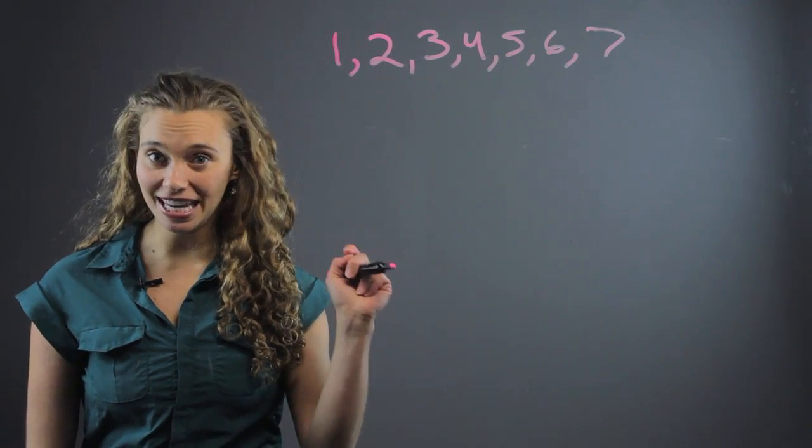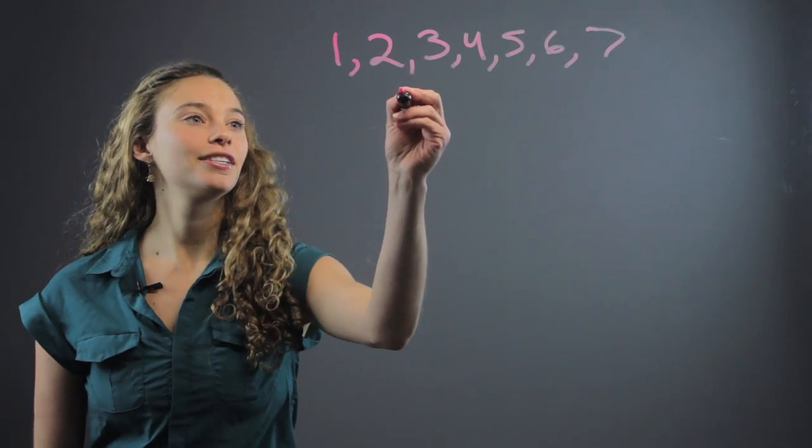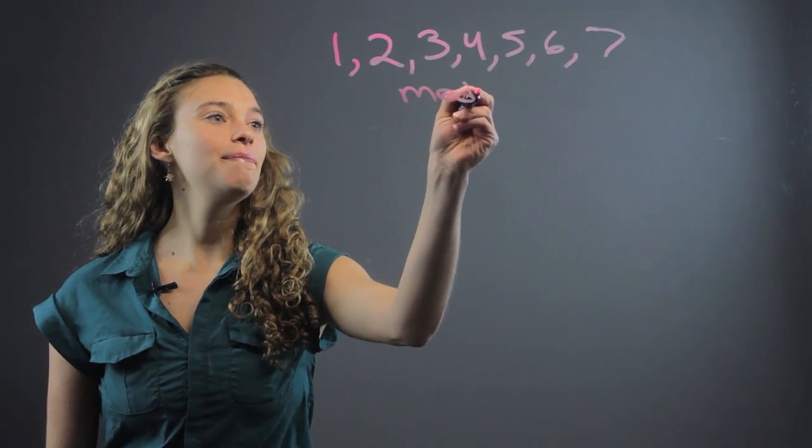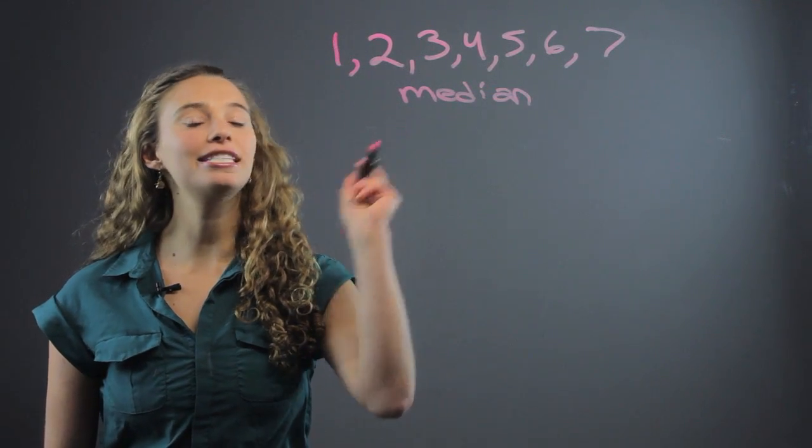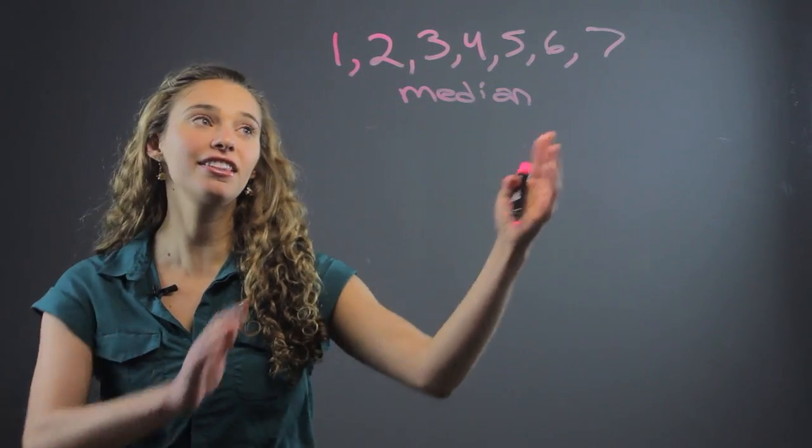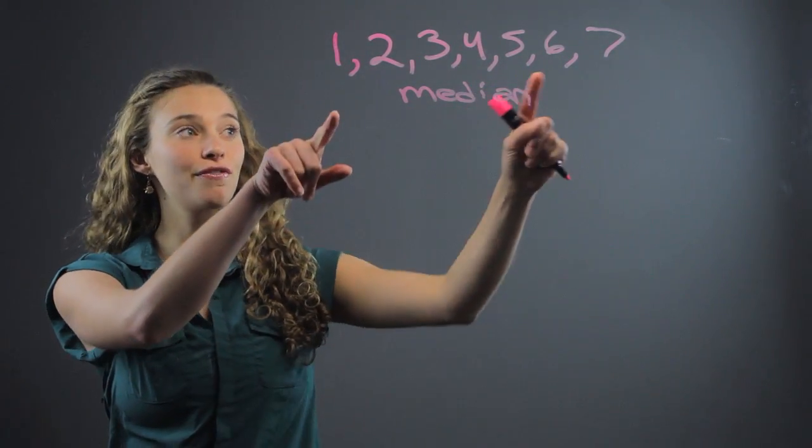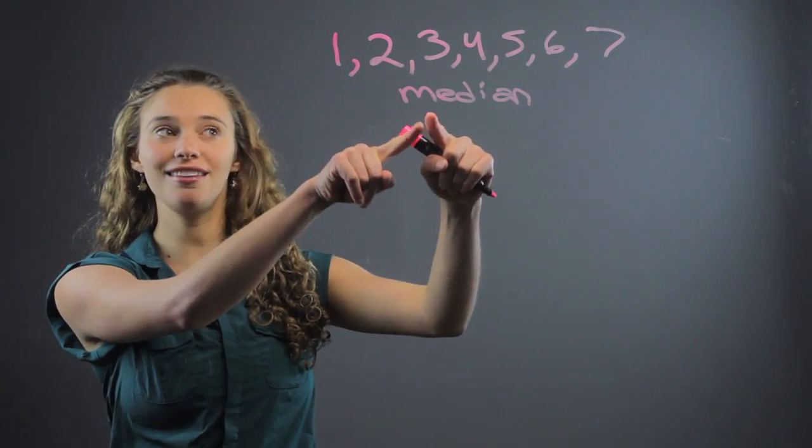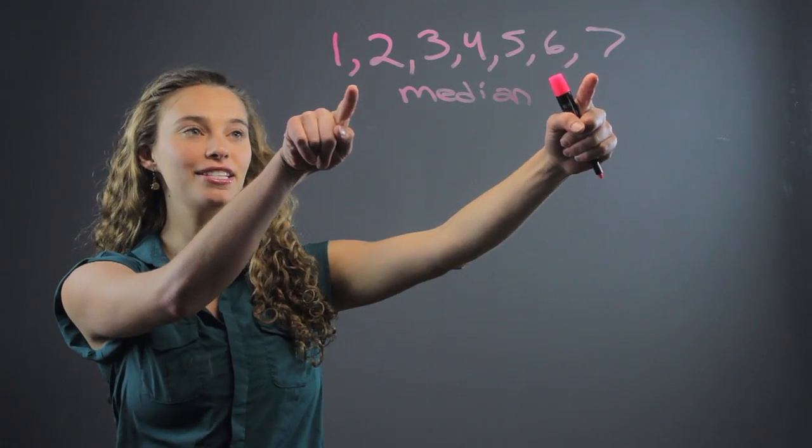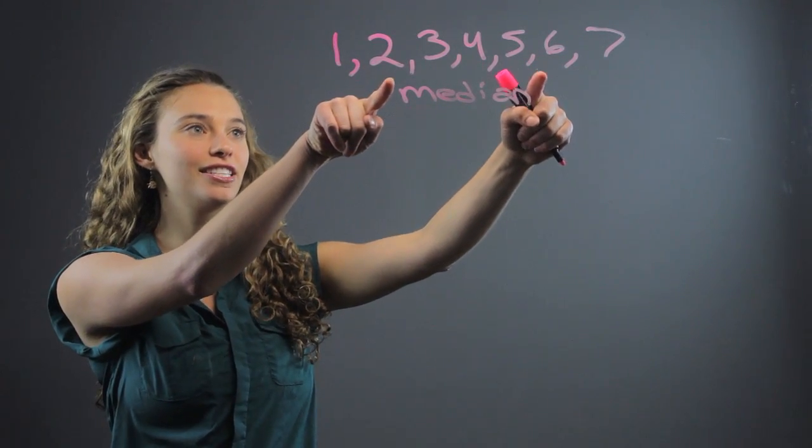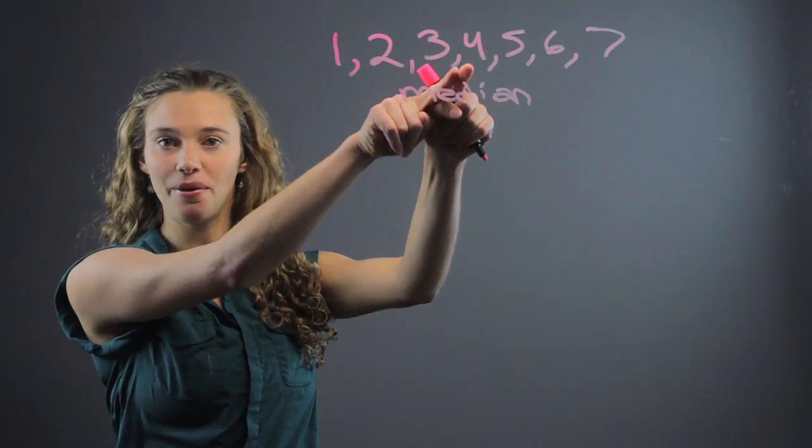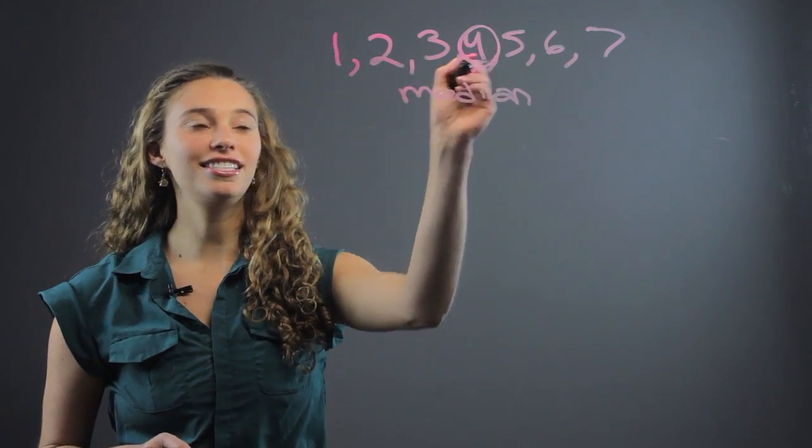First you have to find the median. That is step one. Median. The median for those of you who don't know is the middle number, literally the number that's in the middle. So if you count from outside in, it will be the number in the middle. So we start with 1 and 7, 2 and 6, 3 and 5. 4 is the number in the middle. This is our median.